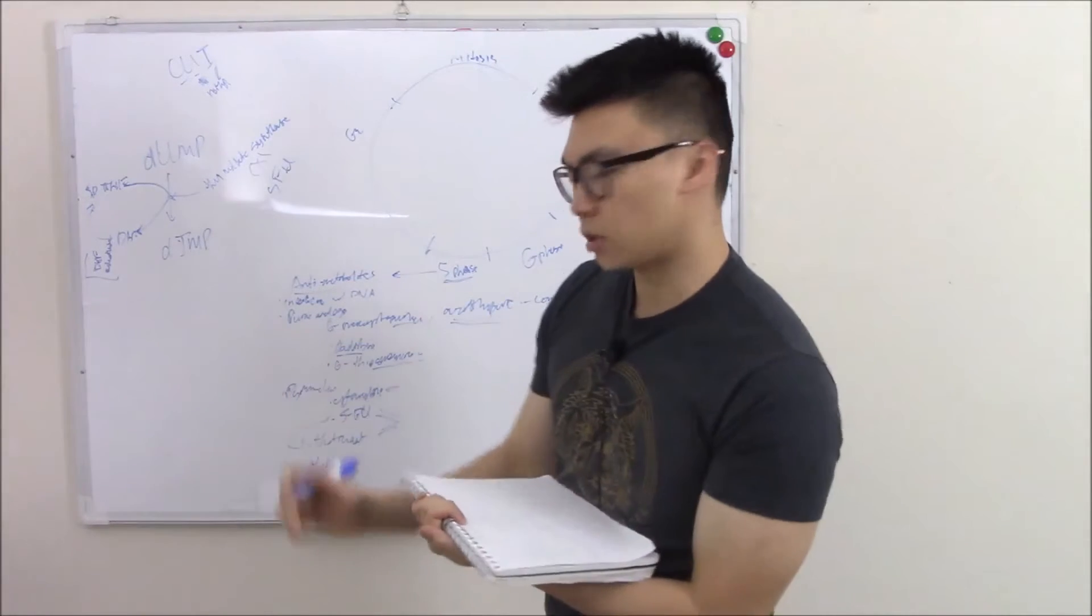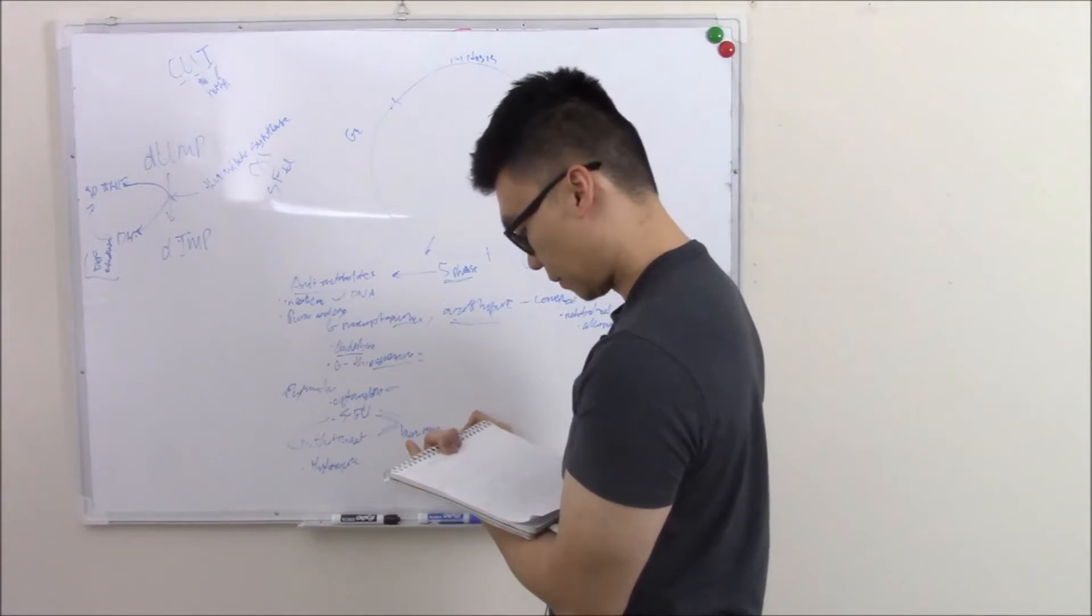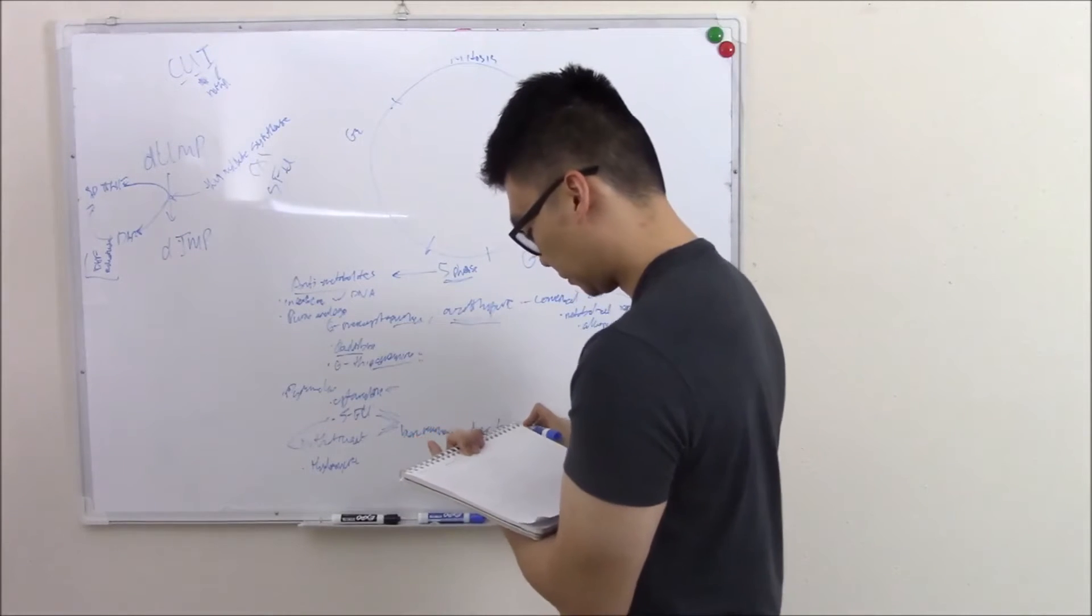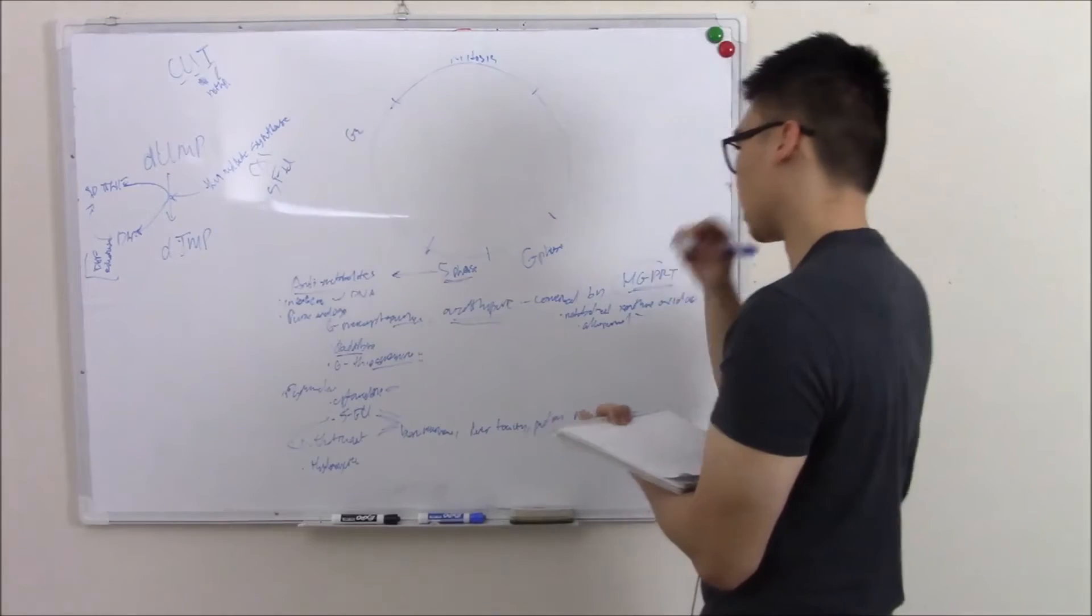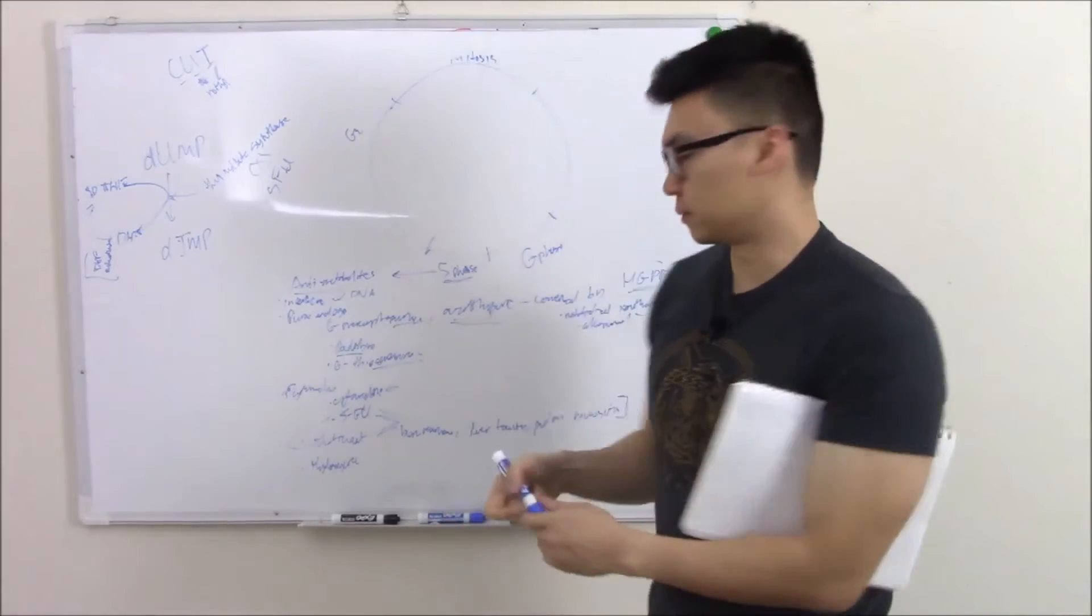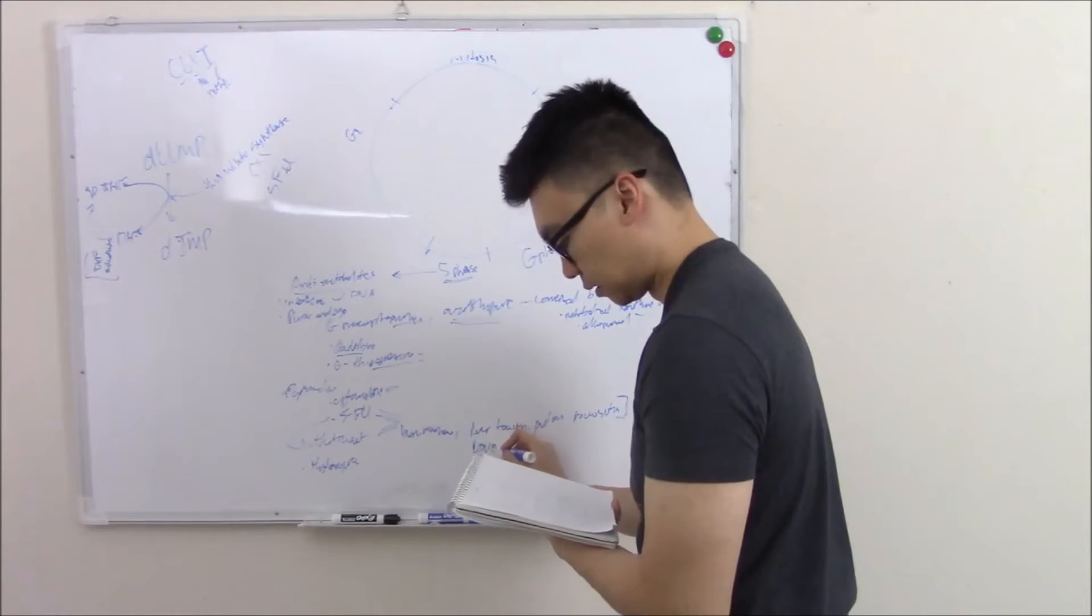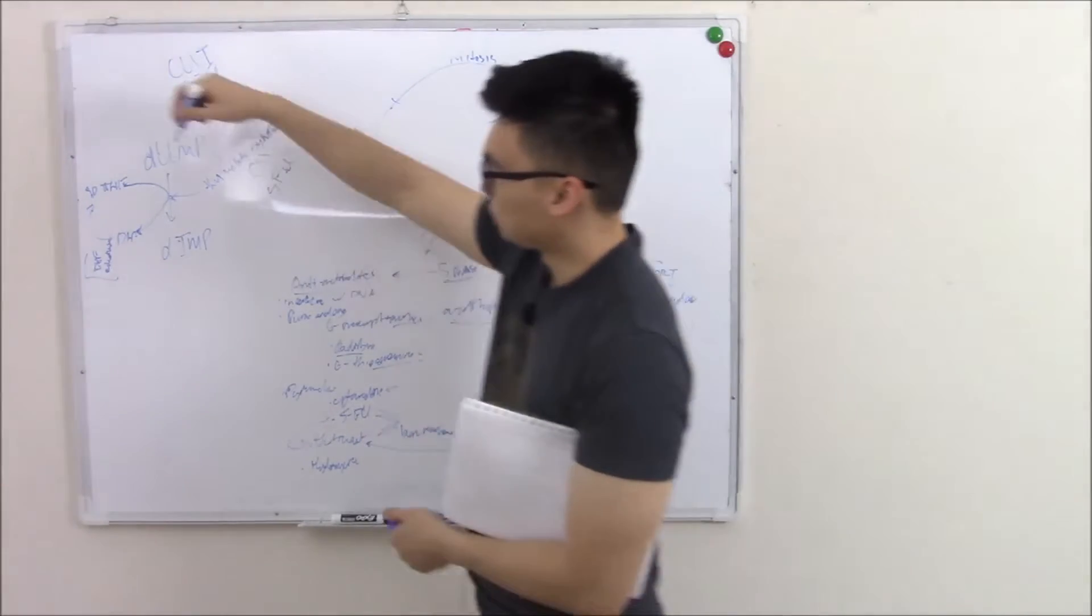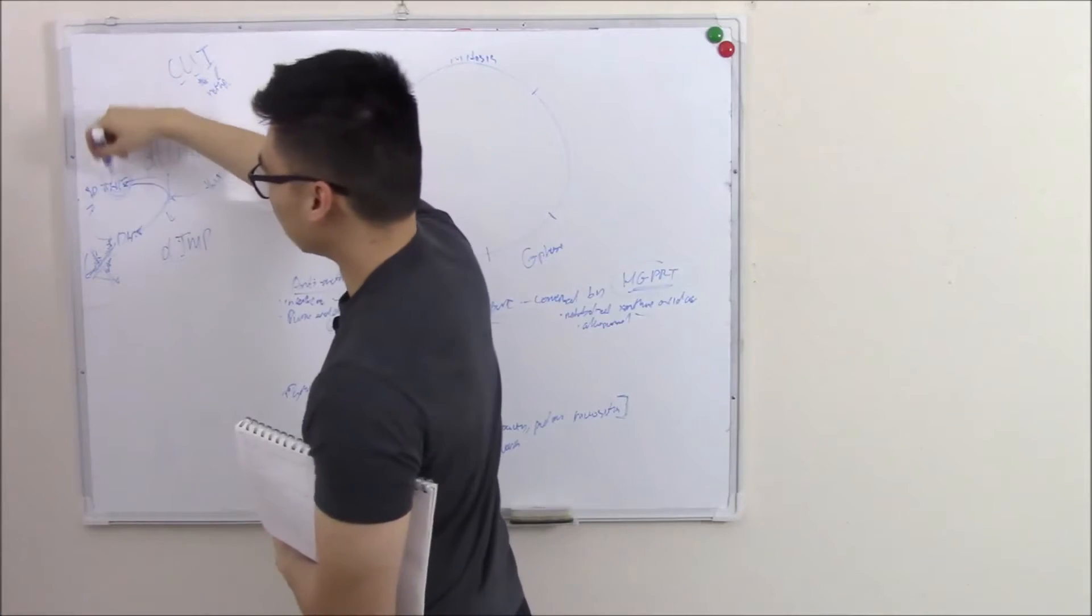Some side effects you should know, especially for methotrexate. Methotrexate is very toxic. Bone marrow suppression, liver toxicity, pulmonary fibrosis, and mucositis, so inflammation of your mucous membranes. In particular, you get mouth ulcers. Now if we want to reduce these symptoms or if there's an overdose, we can give folate, a folate derivative called leucovorin. And if we give leucovorin for methotrexate, then we can bypass this roadblock. So if methotrexate is blocking the recycling of folate, then we can just give folate and it'll bypass the roadblock.